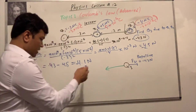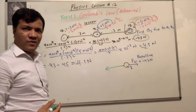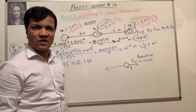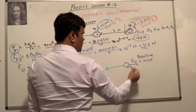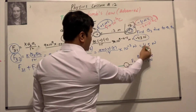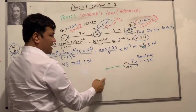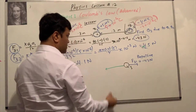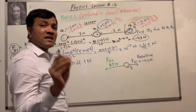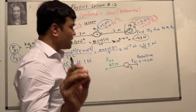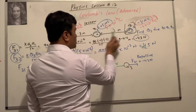The green line represents F32. q3 is negative and q2 is positive, so this is an attractive force — negative is attracted to positive. The attractive force between q2 and q3 is 4.5 Newton. So I write 4.5 Newton, representing F32. There is a 4.5 Newton attractive force acting between q2 and q3.